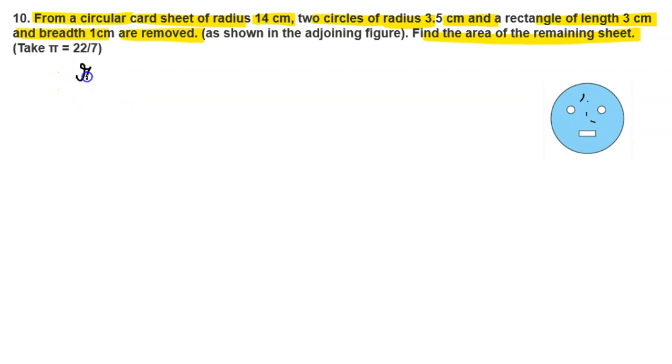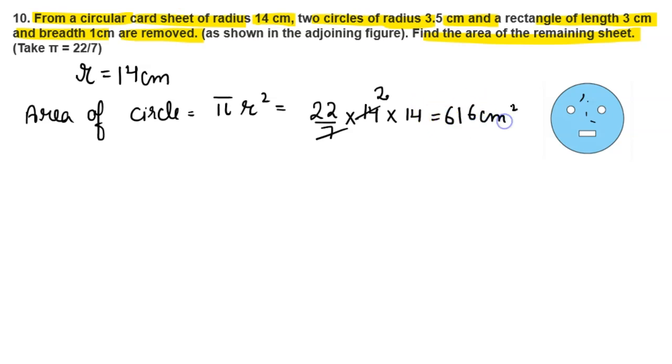First, the radius is 14 cm. Area of the circle is πr² = (22/7) × 14². This is 14 × 14. Seven goes into 14 twice, so the area of the circle is 616 cm². This is the area of the big circle.